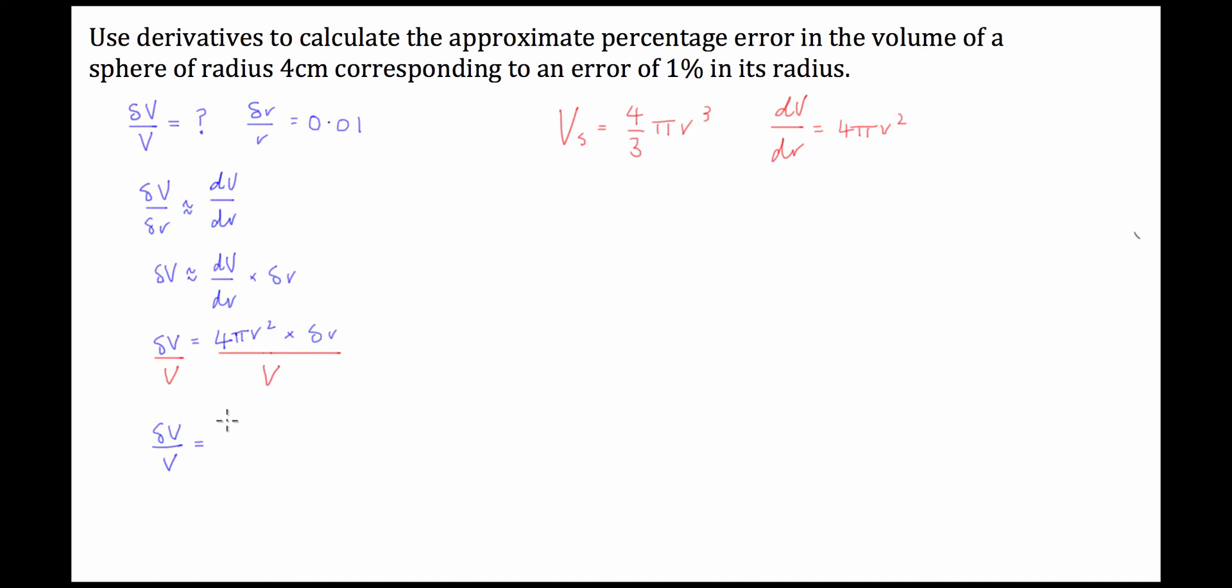is equal to 4 pi r squared times by delta r. Now instead of writing v on the bottom here we're going to write what the volume is actually equal to in terms of radius. So that's going to be divided by this, so that's going to be divided by 4 over 3 pi r cubed.